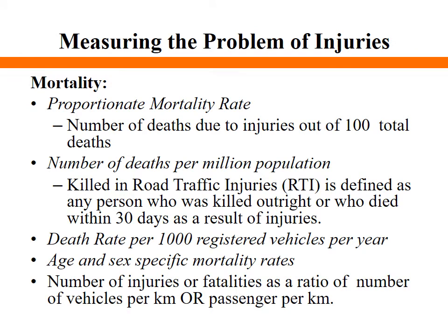Metrics related to mortality include: the proportionate mortality rate — the number of deaths caused by road traffic injuries out of total deaths per 100,000 population; deaths per million population, where a person is counted if killed outright or dying within 30 days as a result of injuries; death rate per 1,000 registered vehicles per year; and age- and sex-specific mortality rates, which allow us to identify the subgroup more prone to road traffic injuries.